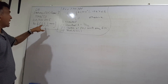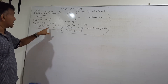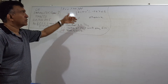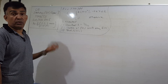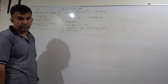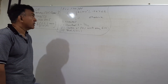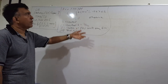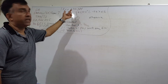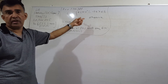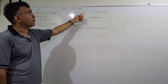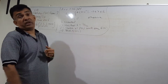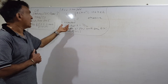The question has three parts: the first part has three points, the second part has two points, and the third part has three points. It involves continuous random variables. We have a random variable X with a probability density function (PDF): K times (4 minus x squared) for x between negative 2 and 2, and 0 elsewhere.